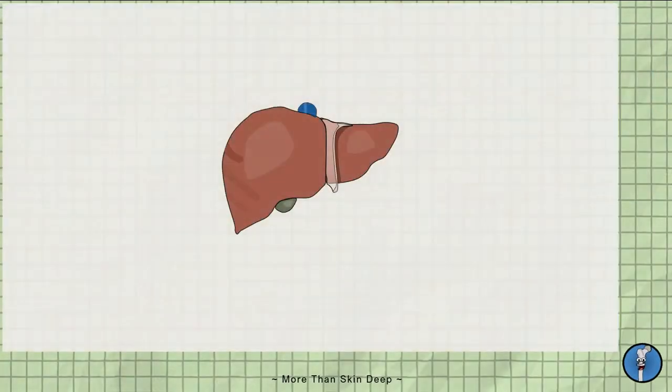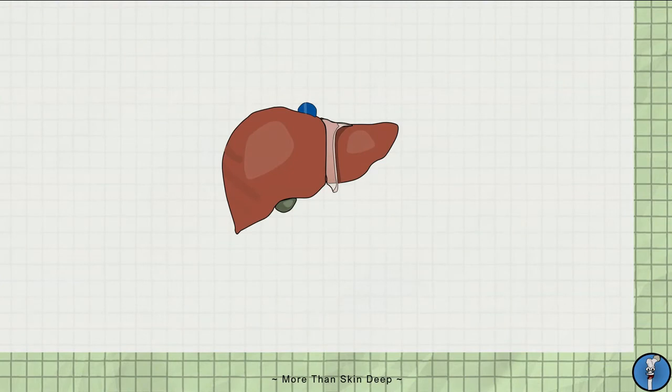Firstly, here is an anterior view of the liver. The liver is the largest internal organ in the body and receives roughly 10-25% of the body's blood supply at any one time.